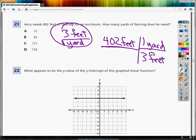So now the feet units themselves will cancel out. So I do 402 times one divided by three. I just do essentially 402 divided by three, and it gives me 134.